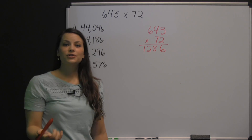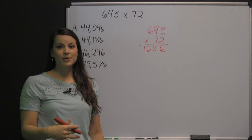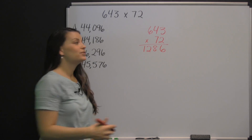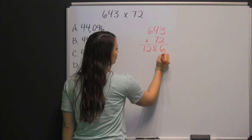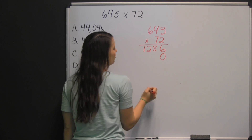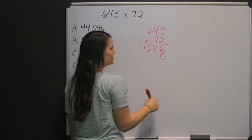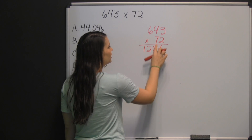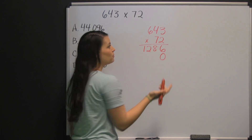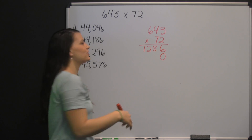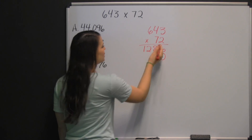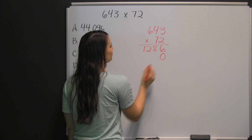Now we're going to move over to the tens place. So that means, first, we need to put a zero in the ones place. Then we go and multiply the seven times each digit in the first number, like we did with the two.